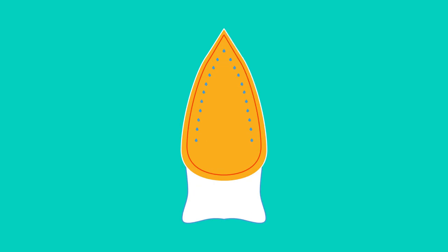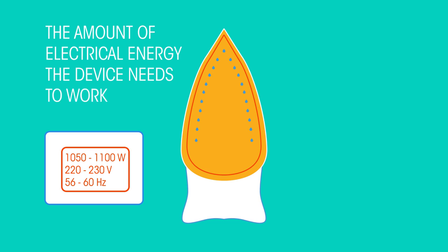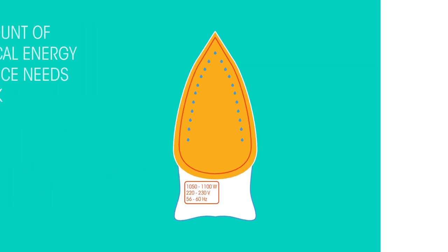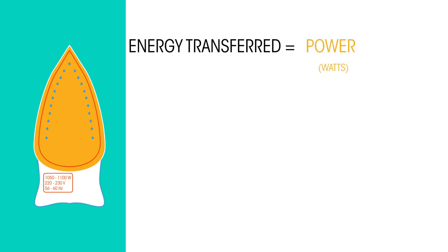An electrical device will have a power rating — this is the amount of electrical energy the device needs to work. We can calculate how much electrical energy a device transfers by multiplying the power rating by the amount of time the device is on, in hours.